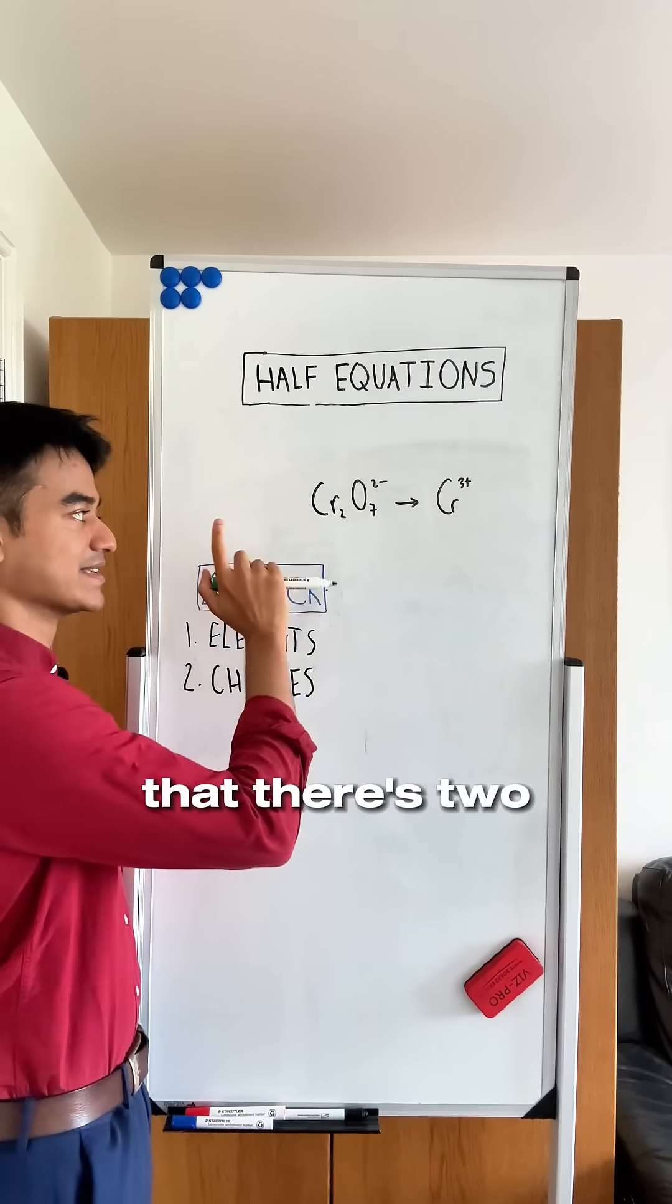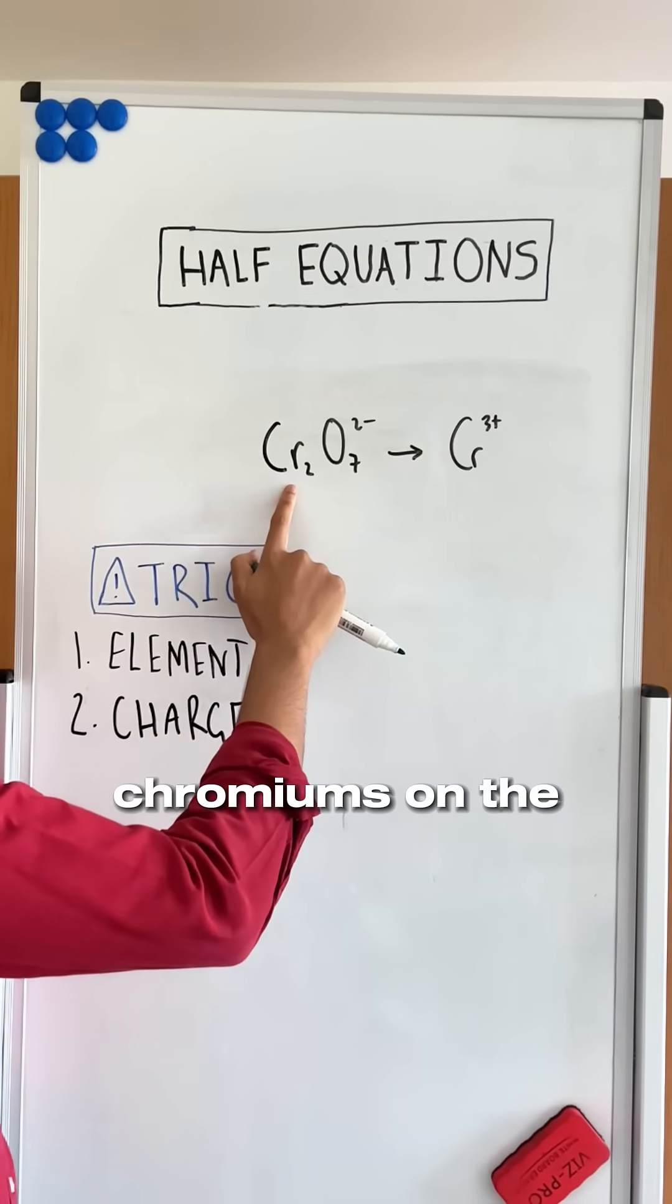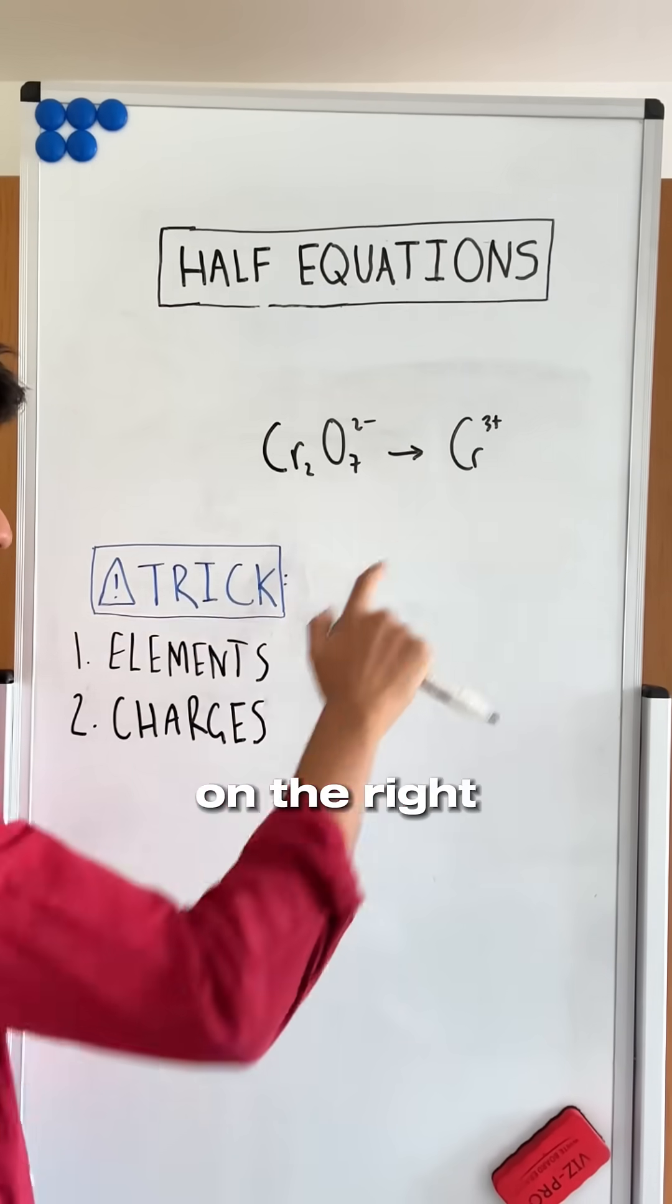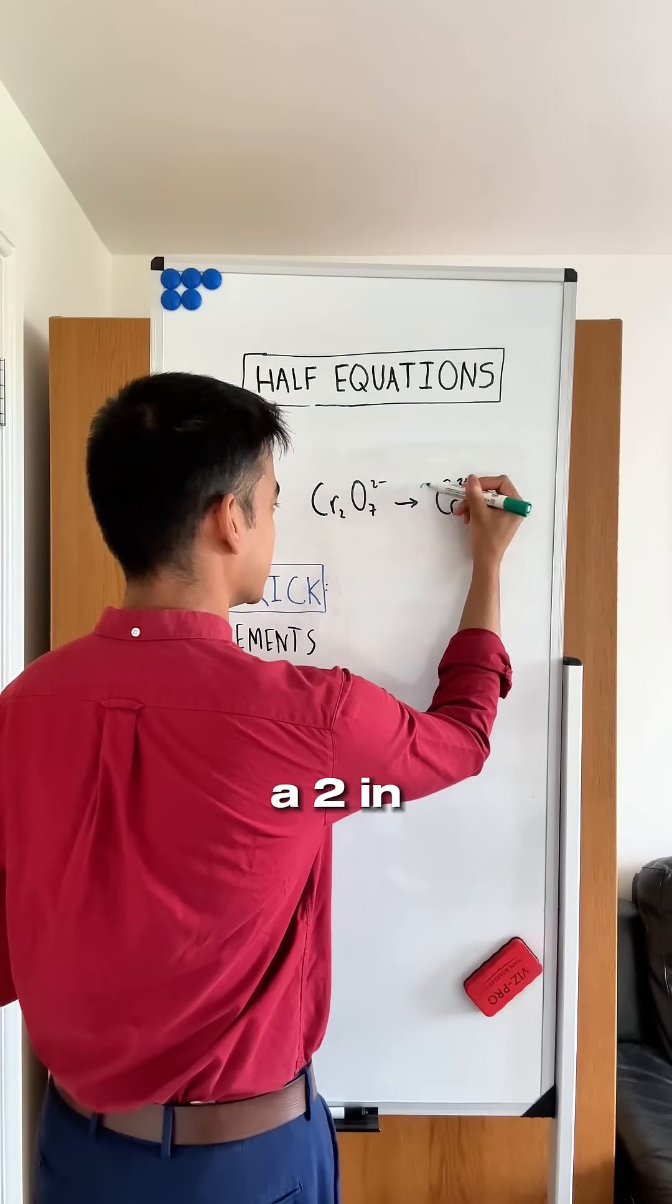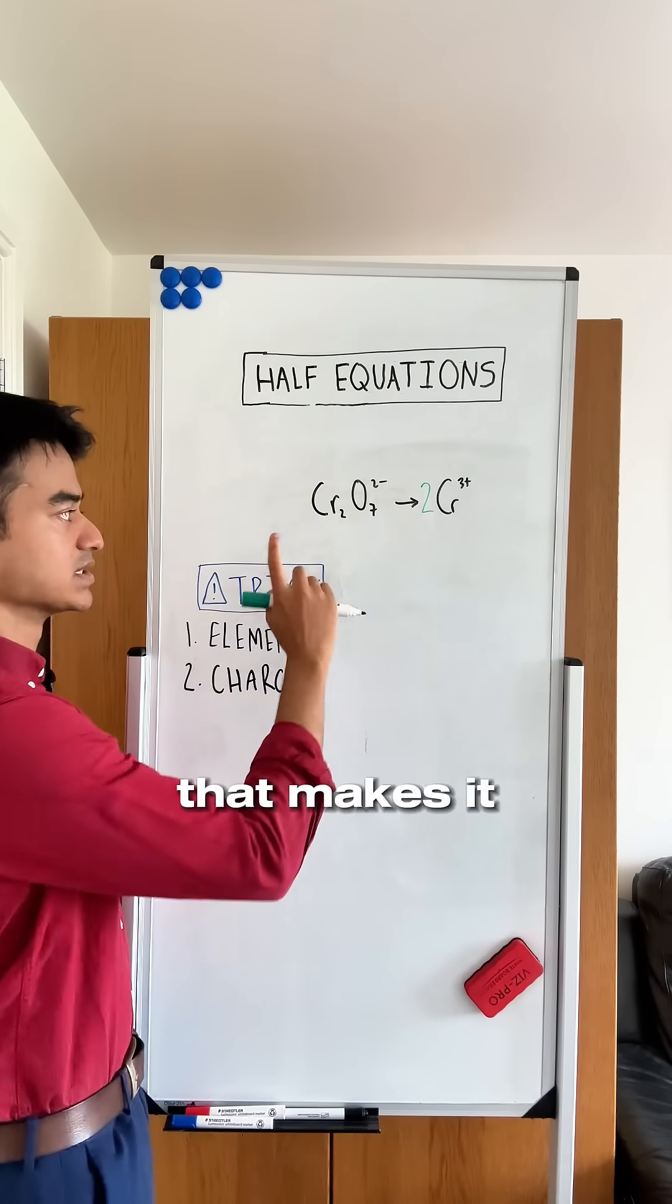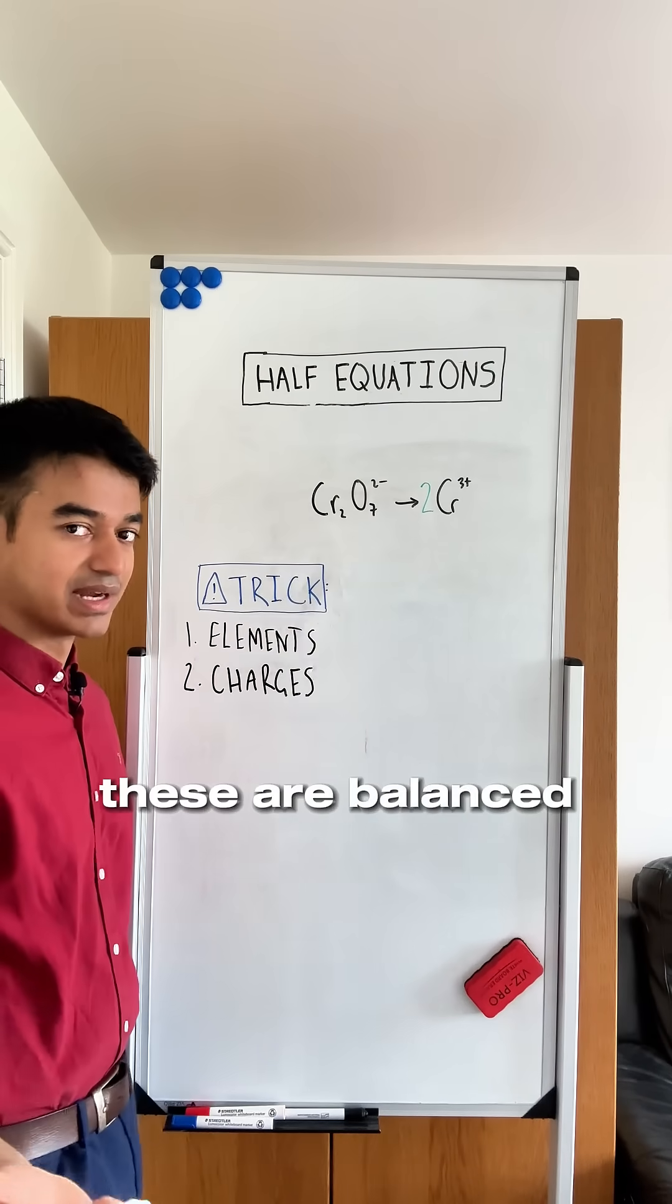To balance the elements, I can see there are two chromiums on the left-hand side but only one on the right-hand side. I can put a 2 in front of the Cr there. That makes it 2, 2. These are balanced.